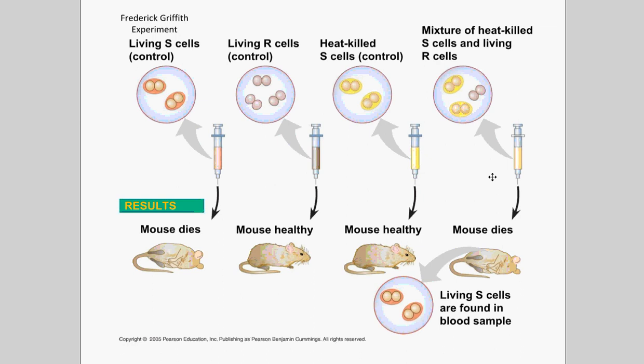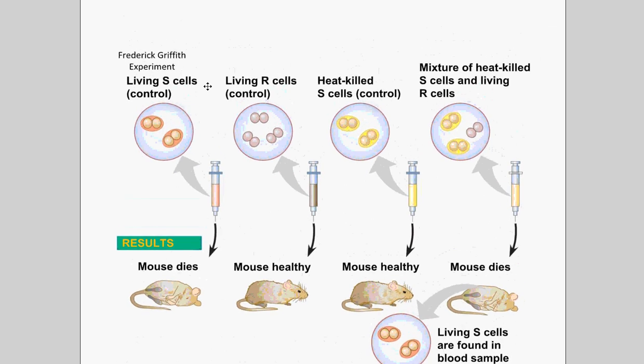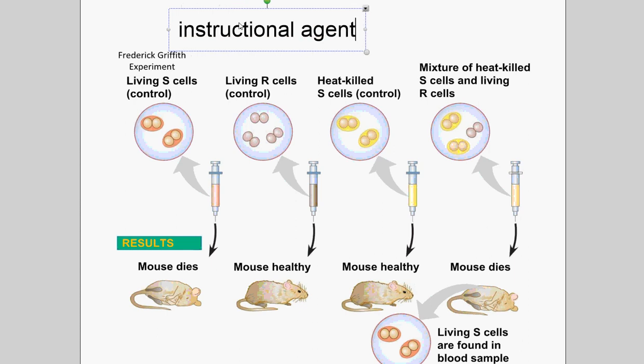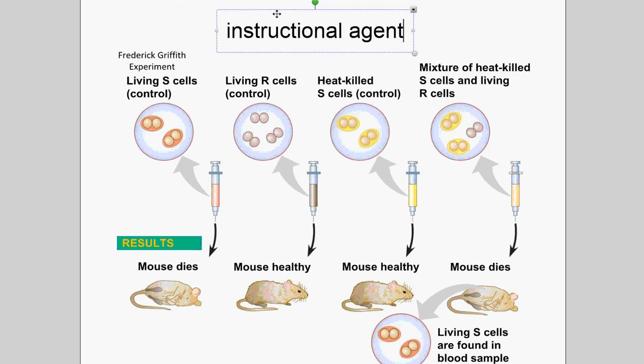Griffith didn't know exactly what was happening, but he proposed that there was some sort of 'transformational agent' causing the bacteria to change. This idea of bacterial transformation is still used today, but Griffith didn't know it was DNA causing the change. By and large, the scientific community believed that proteins were the molecules that were inherited from one generation to the next, so they weren't sure what this agent was.